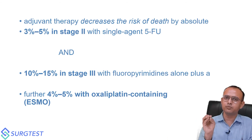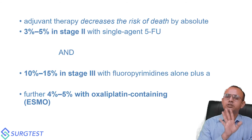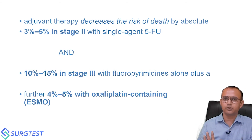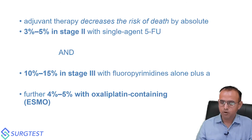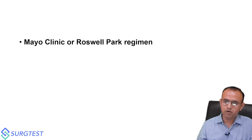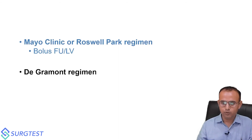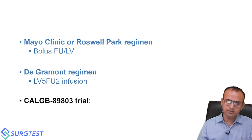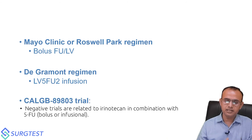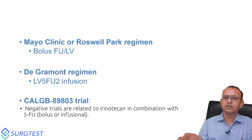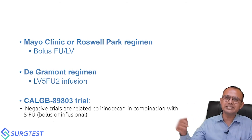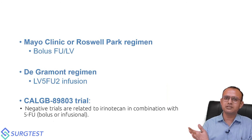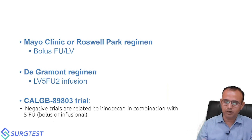So in stage two disease, 5-FU or capecitabine gives a benefit of 3 to 5 percent — no oxaliplatin needed. In stage three, adding oxaliplatin with 5-fluorouracil gives adequate benefit, so stage three should receive FOLFOX or CAPOX. The Mayo Clinic and Roswell Park regimens are bolus 5-FU with leucovorin. The de Gramont regimen is leucovorin with 5-FU. The CALGB 89803 trial was a negative trial for irinotecan combination with 5-FU, so irinotecan should be avoided in the initial adjuvant phase.